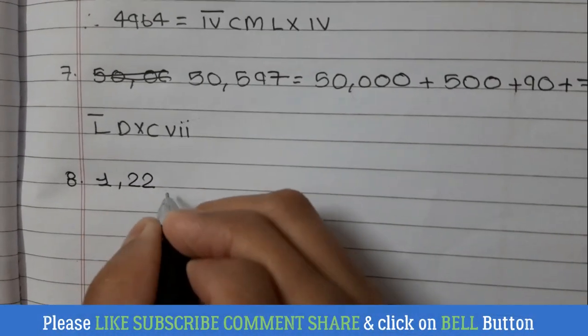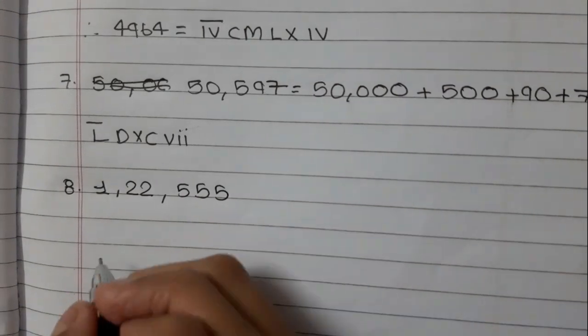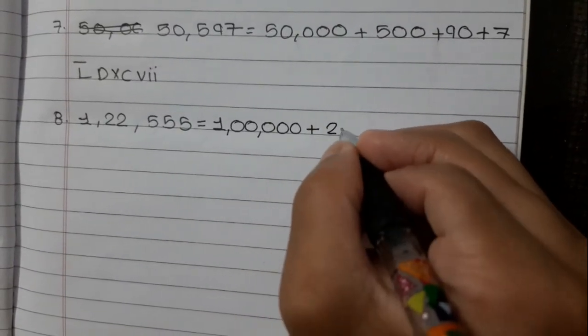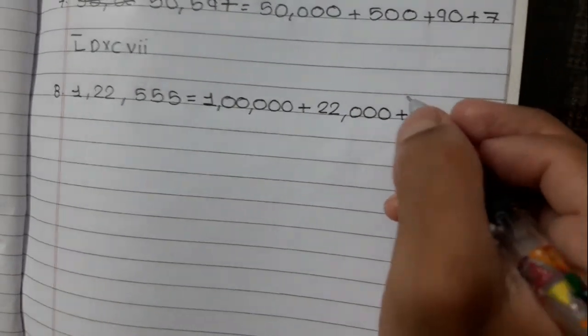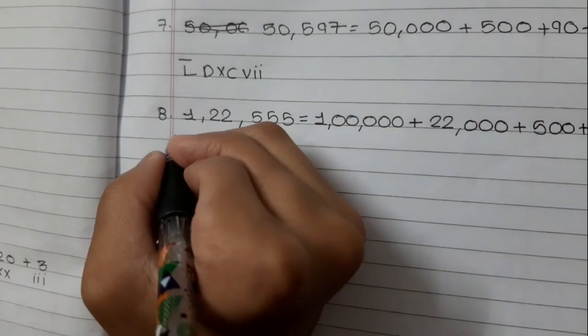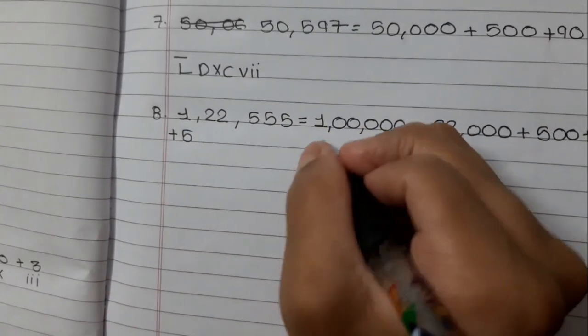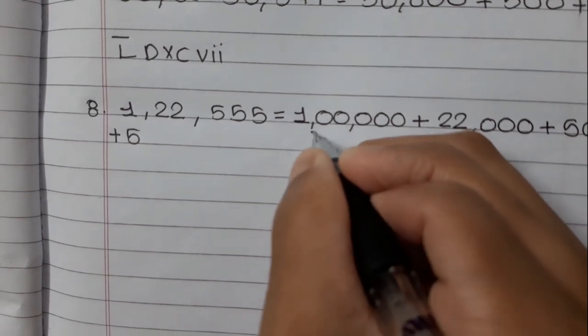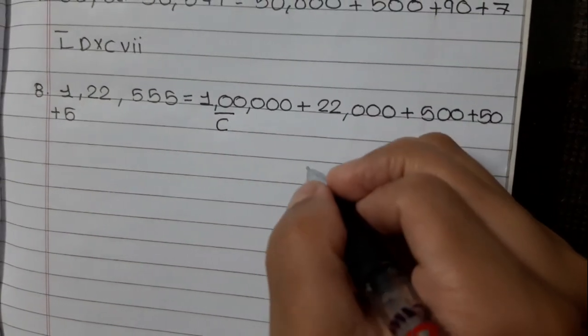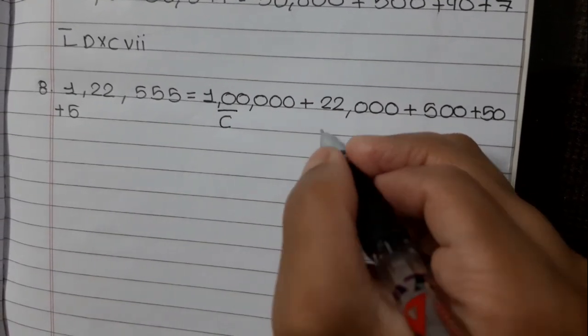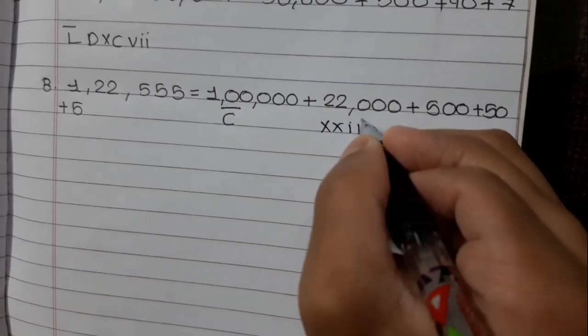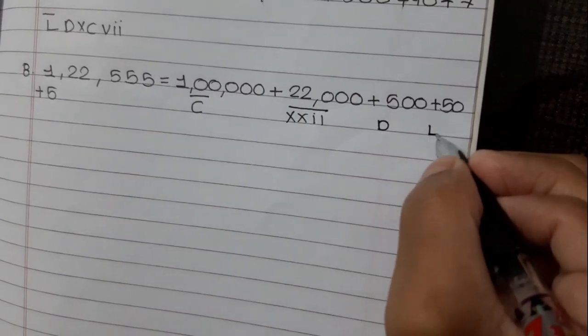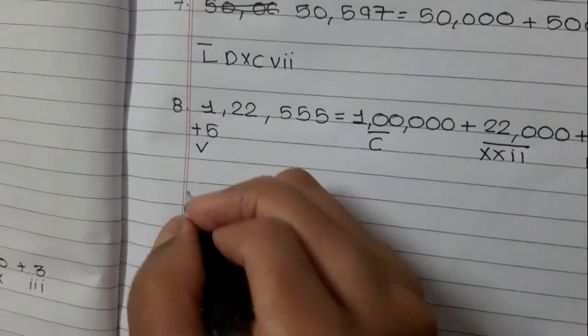Let's take one more bigger example: 1,22,555. Let's split it. 100,000 plus 22,000 plus 500 plus 50 plus 5. 100 times 1000 is 100,000, which is C bar. 22,000 is XXII bar. 500 is D. 50 is L. 5 is V. Let's join it together.